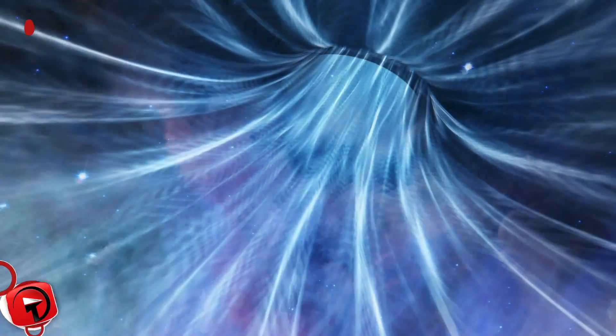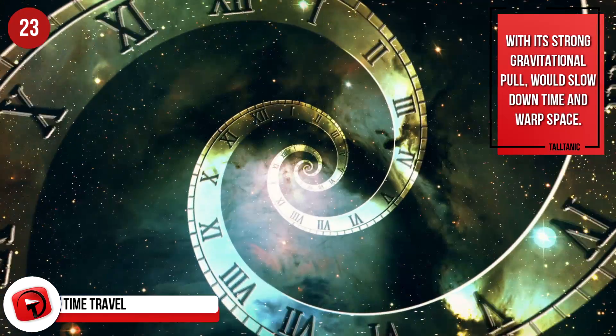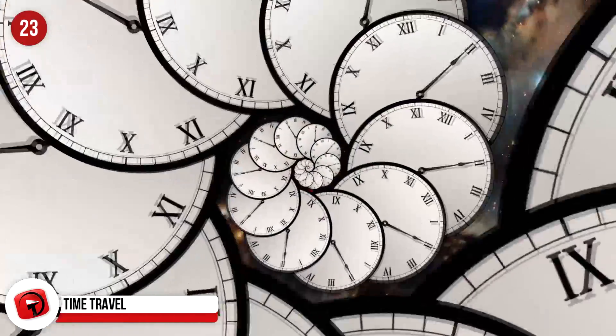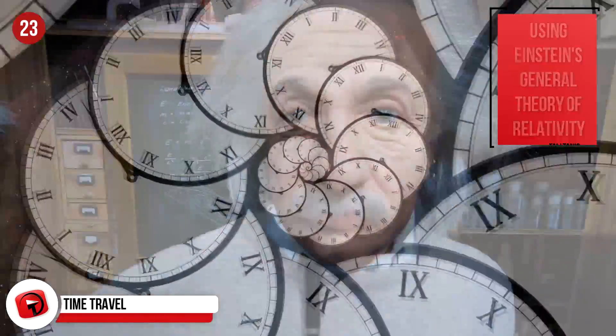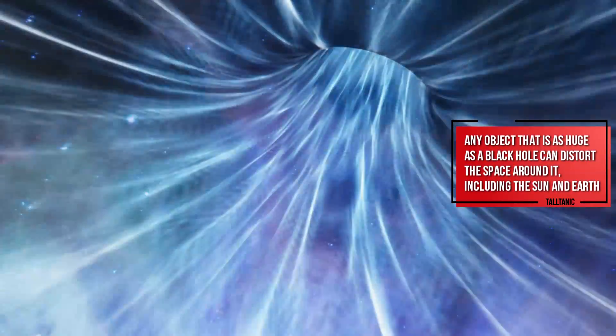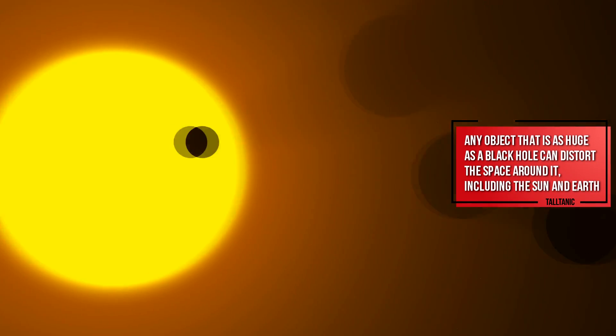Time Travel. Black holes don't give a hoot about time and space, and with its strong gravitational pull, it would slow down time and warp space. Some believe that this could be the key to making time travel a possibility. Using Einstein's general theory of relativity, any object that is as huge as a black hole can distort the space around it, including the Sun and Earth.